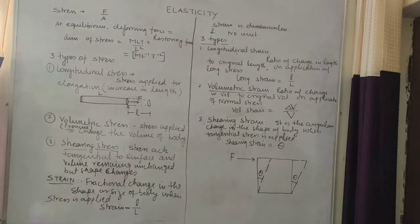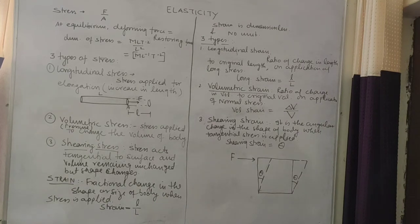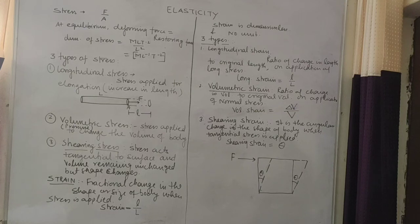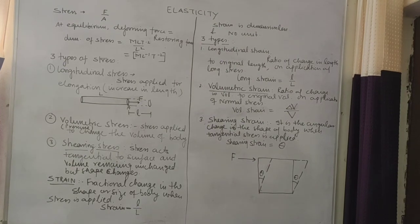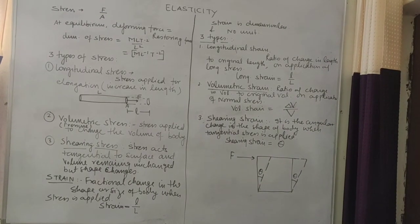So those are three types of stress and three types of strain as used in this chapter. There is a relation between stress and strain explained by Hooke's law — I will explain this in the concept of potential energy of a spring. In the next video I will start with Hooke's law. Thank you.